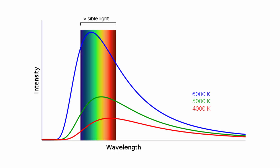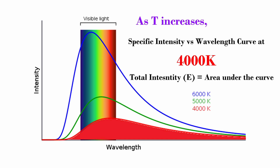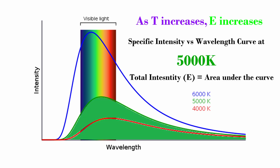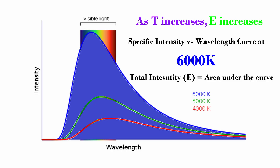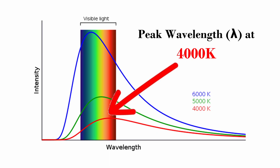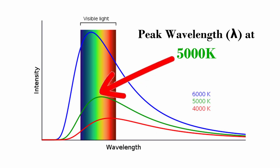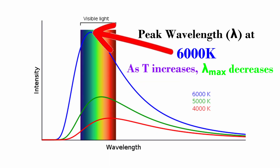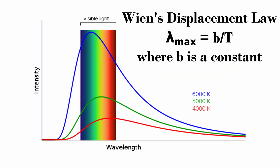Two distinct relationships were immediately recognized after collecting this data. The first was that as the temperature of the black body increased, the overall intensity of light emitted from the black body also increased. This came to be known as the Stefan-Boltzmann Law. The second relationship discovered was that as the temperature of the black body increased, the wavelength of light emitted at the highest specific intensity decreased. This came to be known as Wien's Displacement Law.